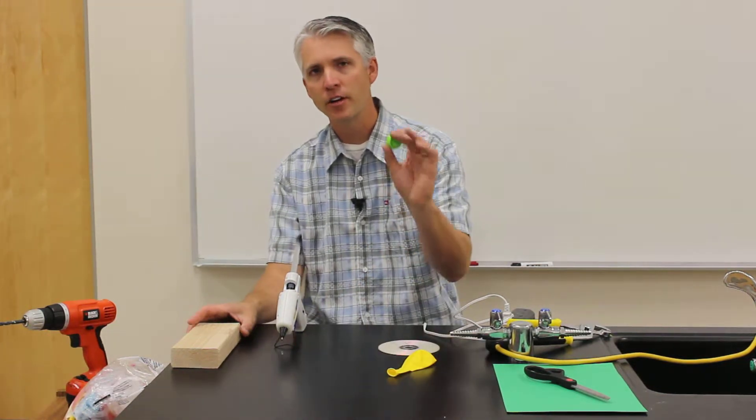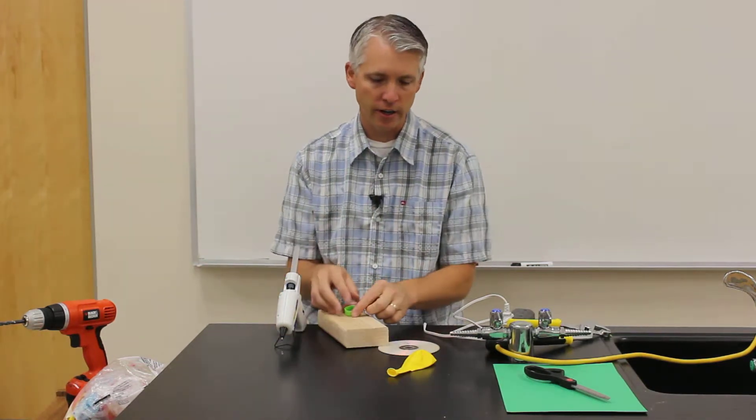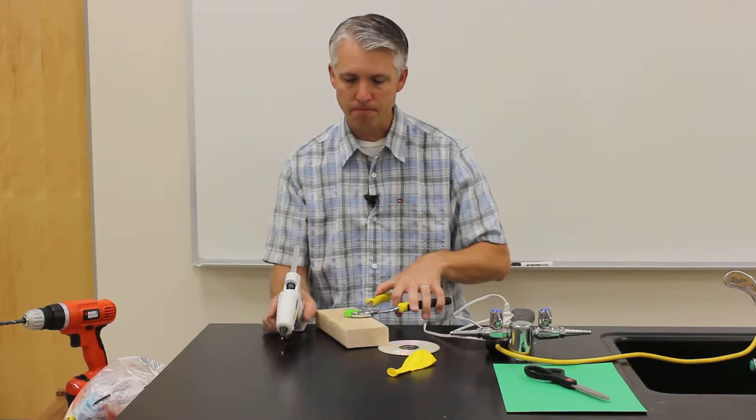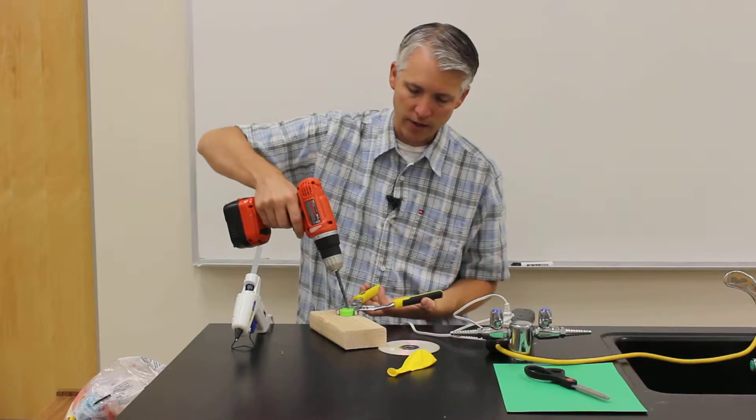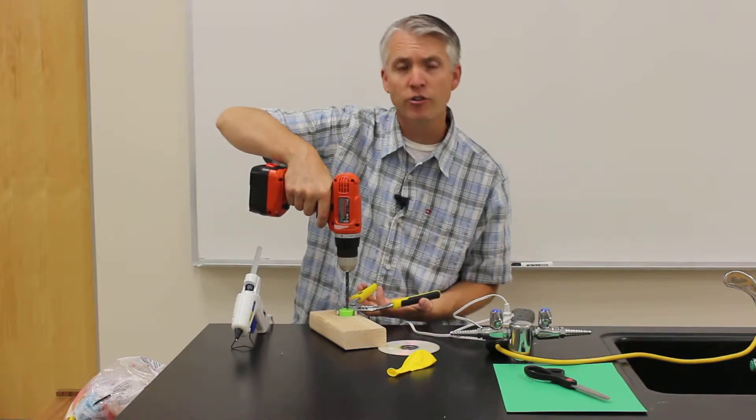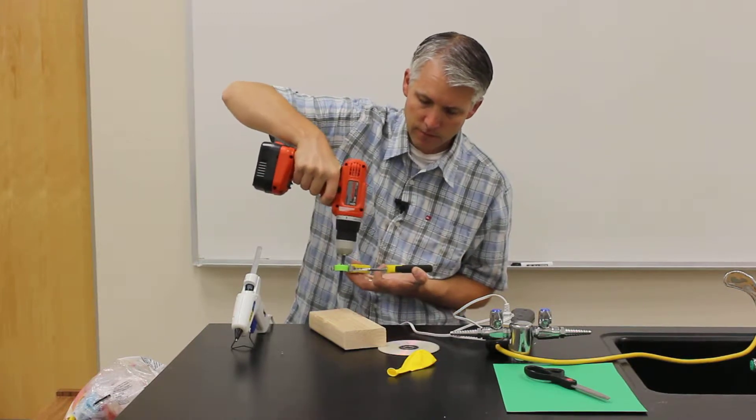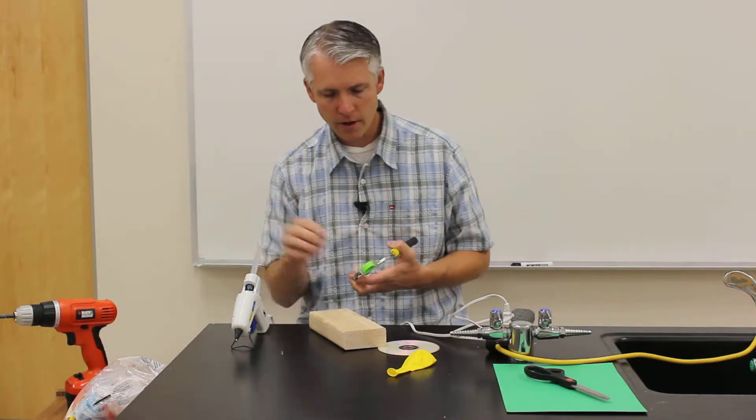So I'm going to start off by taking the bottle cap, and I need to drill a small hole in it. I've got a block of wood here to help me, and I'm going to take pliers here and actually hold that down so that I can drill without it going everywhere. You want to drill the hole right in the middle if you can. Okay, so we've got a hole there in the middle.